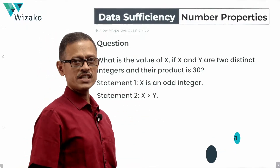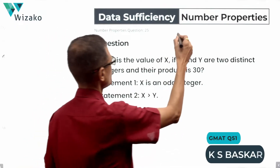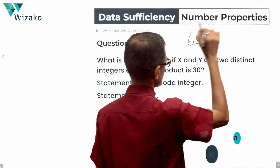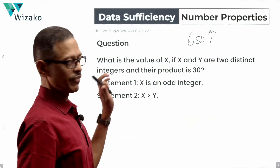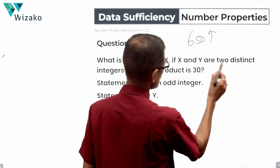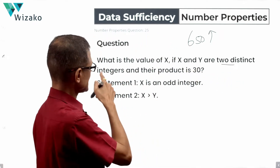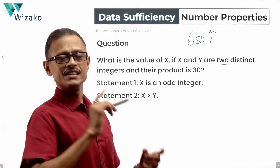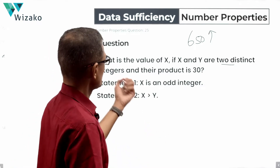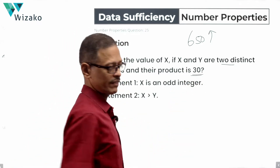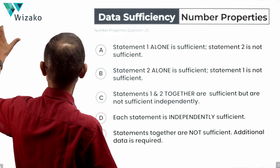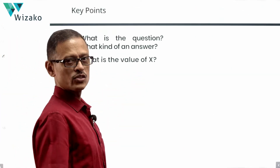This is a medium difficulty data sufficiency question on number properties, classified at the 650 level. What is the value of x? If x and y are two distinct integers — so x is not equal to y — and their product is 30, we need to find the value of x.